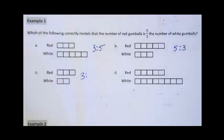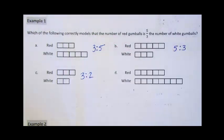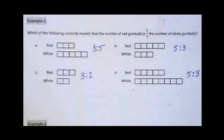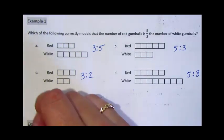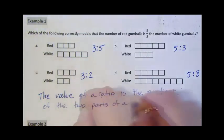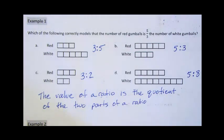In part C, there are three red gumballs for every two white gumballs. And in part D, the ratio of red gumballs to white gumballs is five to eight.